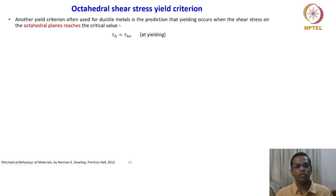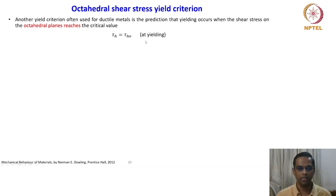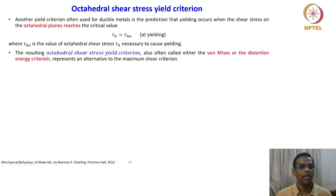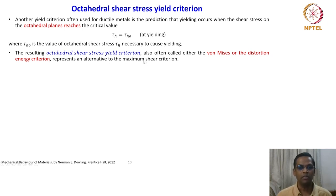Another yield criterion often used for ductile metals is the prediction that yielding occurs when the shear stress on the octahedral planes reaches the critical value: τₕ = τₕ₀ at yielding. We need to understand what an octahedral plane is in our crystal system. Here τₕ₀ is the value of octahedral shear stress necessary to cause yielding. The resulting octahedral shear stress yield criterion — also often called either the von Mises or the distortion energy criterion — represents an alternative to the maximum shear stress criterion.